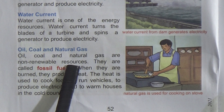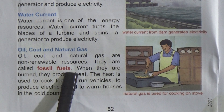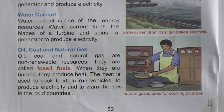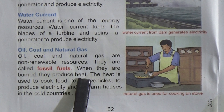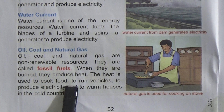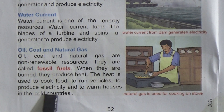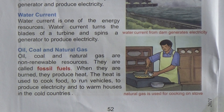Oil, coal, and natural gas are non-renewable resources. They are called fossil fuels. When they are burned, they produce heat. The heat is used to cook food, to run vehicles, to produce electricity, and to warm our houses. Students, now come to page 53.